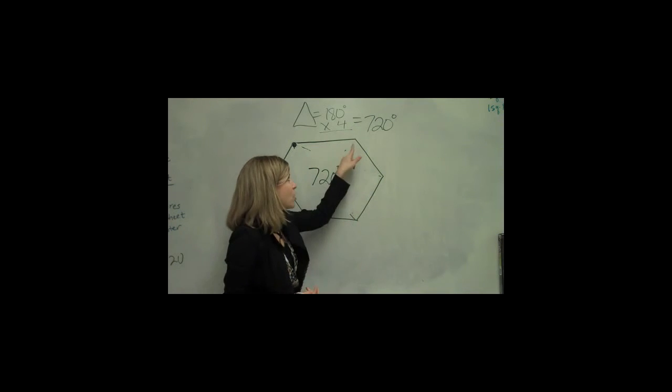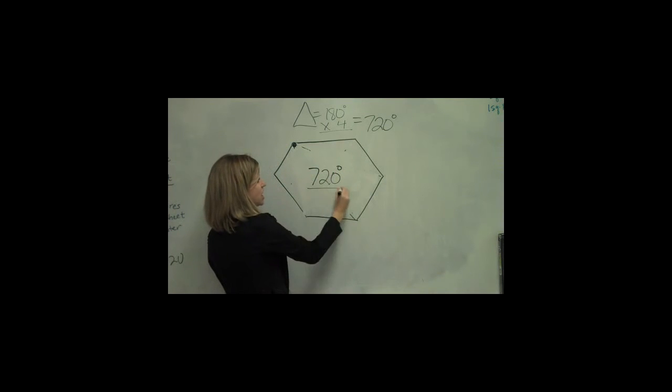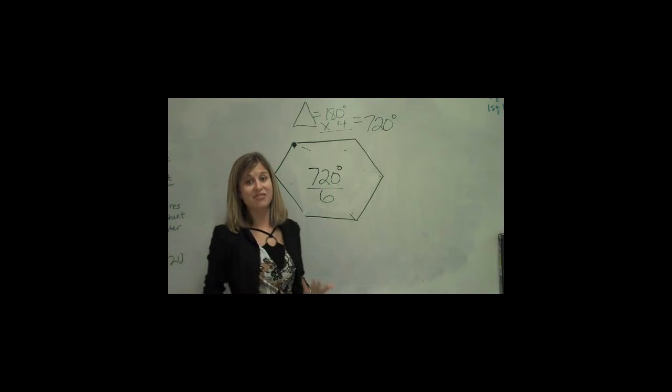Now, if I want to figure out what each angle is individually, I know it's all going to be the same. So I know there are six sides, six corners. All I have to do is divide by six, and that will tell me what each angle is worth.